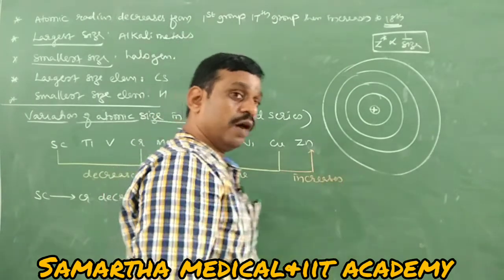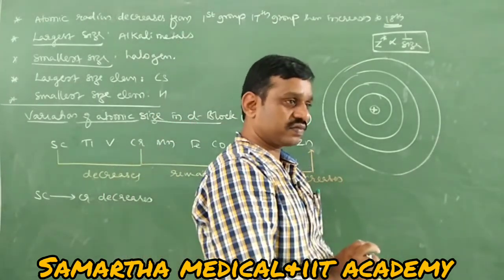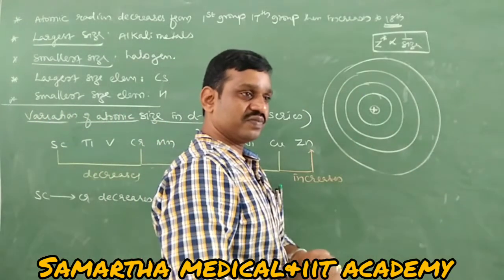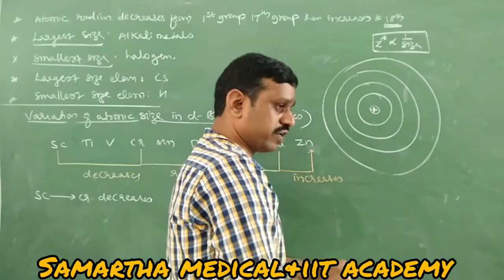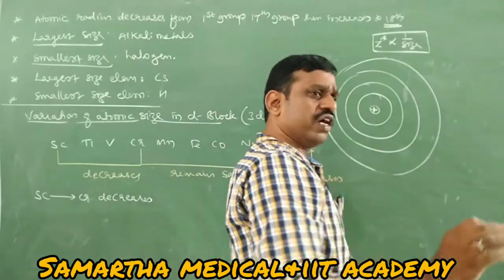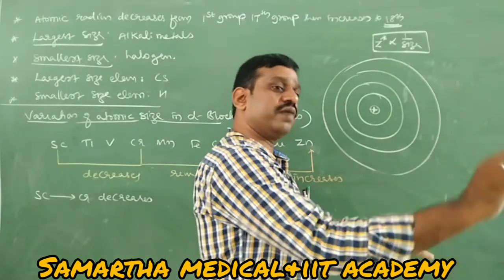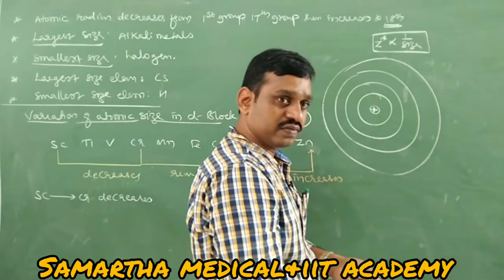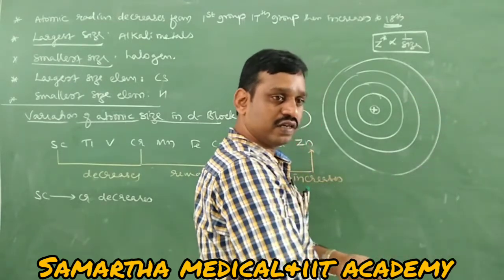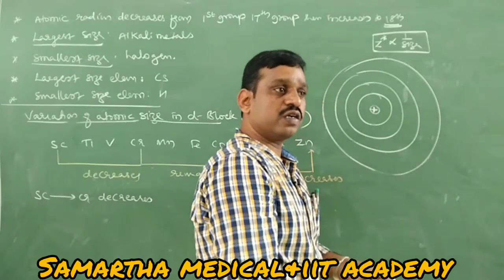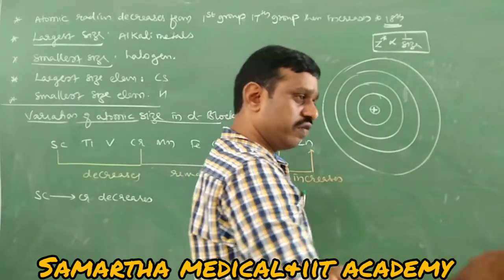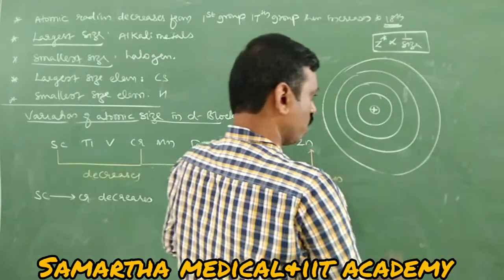The opposite property is screening effect. Due to screening effect, atomic size increases. Screening effect is generally observed in heavy metals and d-block and f-block elements. The screening effect is directly proportional to atomic size.